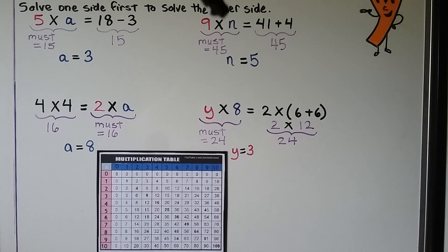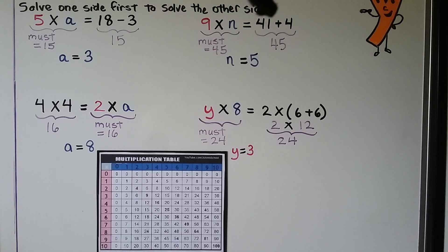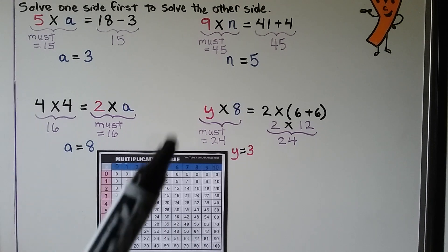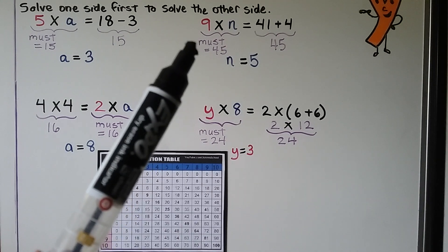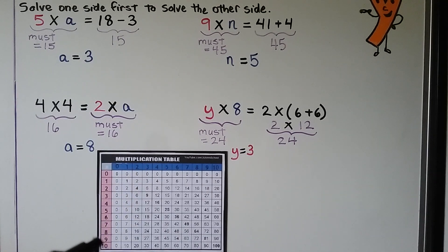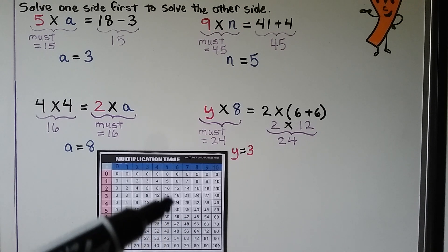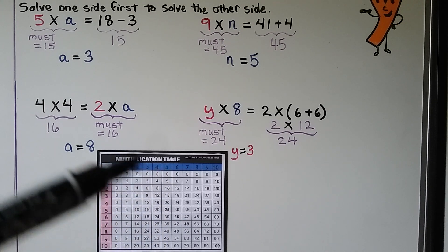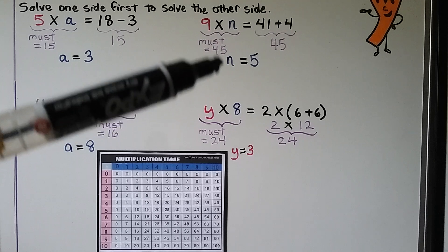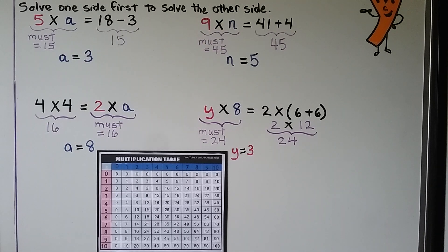Next: 9 times n is equal to 41 plus 4. We do 41 plus 4 and find the sum, which is 45. So this side must be equal to 45. Going across row 9 to 45, then up the column, we see it's in the column for 5. So n is equal to 5.